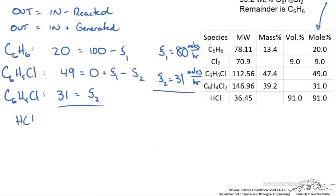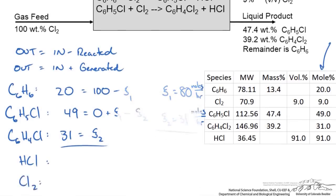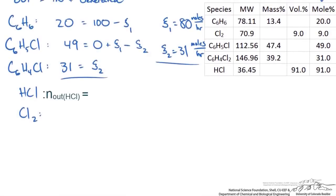We can write this for HCl as well as for the chlorine gas. For HCl, we produce it in reaction 1. We also produce it in reaction 2. We don't consume anything and nothing was added. So for HCl, it is just going to be the moles out, and that is equal to the extent of reaction 1 plus the extent of reaction 2. Based on our extents of reaction, this should be 111 moles per hour. We have 111 moles of hydrochloric acid coming out in the gas stream.